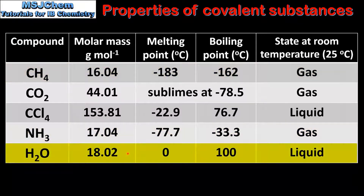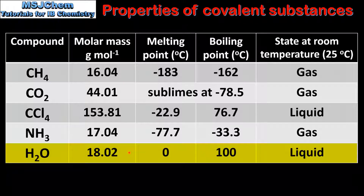And finally we have H2O. Compared to the other examples in the table it has the highest melting and boiling point even though it has a relatively low molar mass. The reason for this is the strong hydrogen bonding that exists between water molecules.